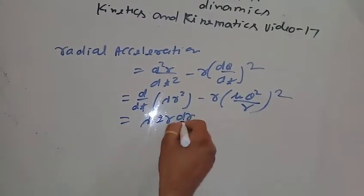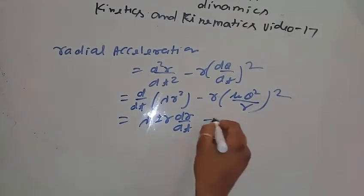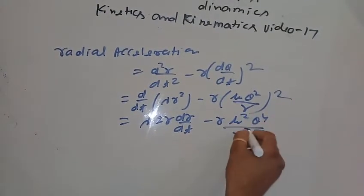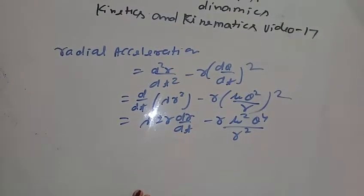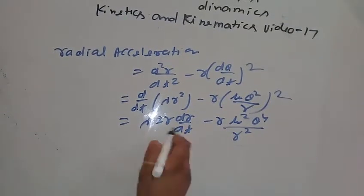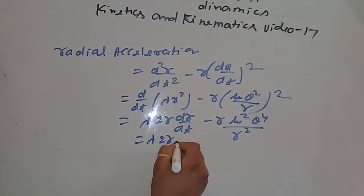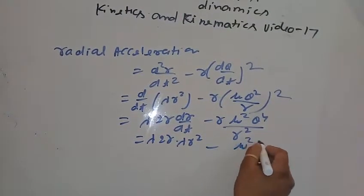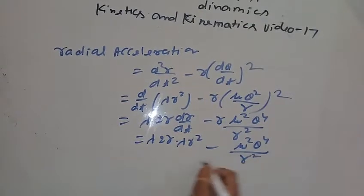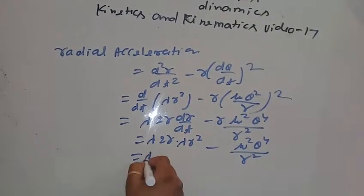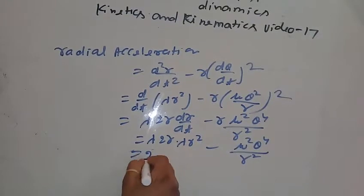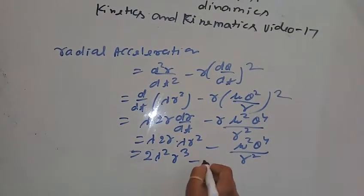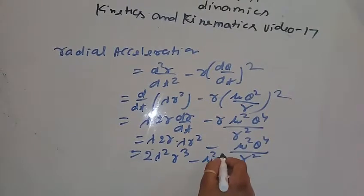So we get d/dt of lambda r squared minus r times mu squared theta to the fourth by r squared, which simplifies to 2 lambda squared r cubed minus mu squared theta to the fourth by r squared.